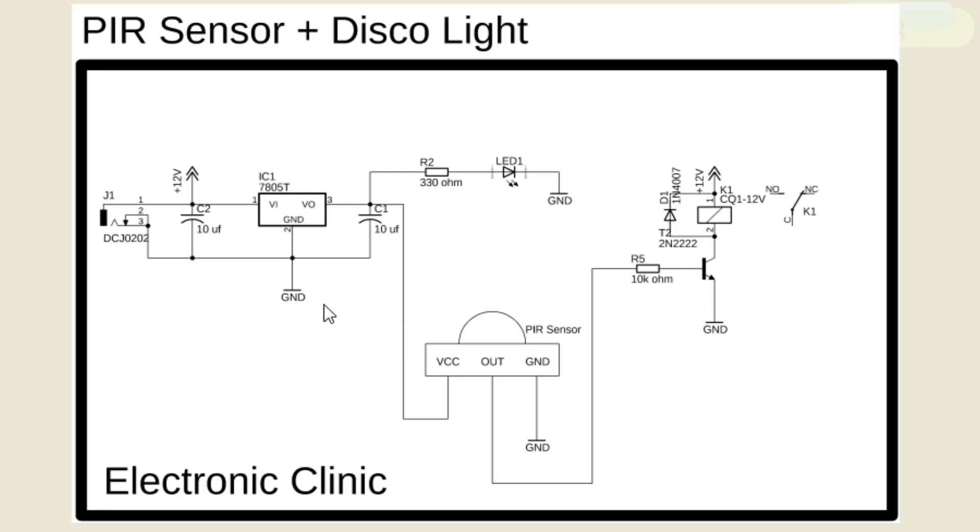This is the DC female power jack. A 10uF capacitor is connected at the input side of the 7805 voltage regulator. Another 10uF capacitor is connected at the output side of the voltage regulator.